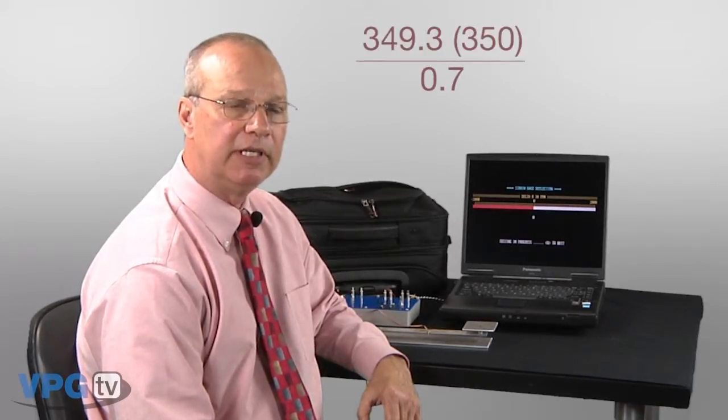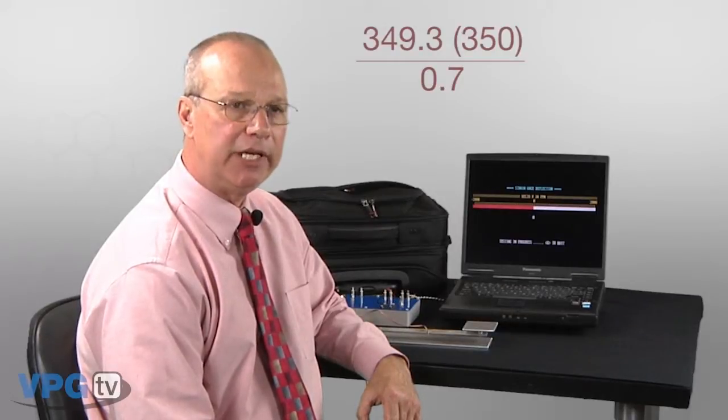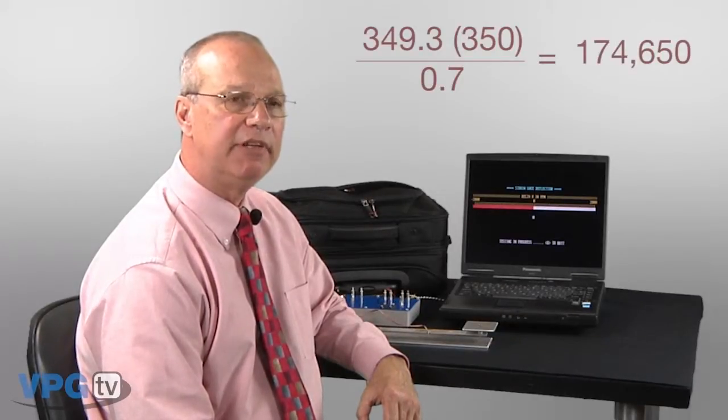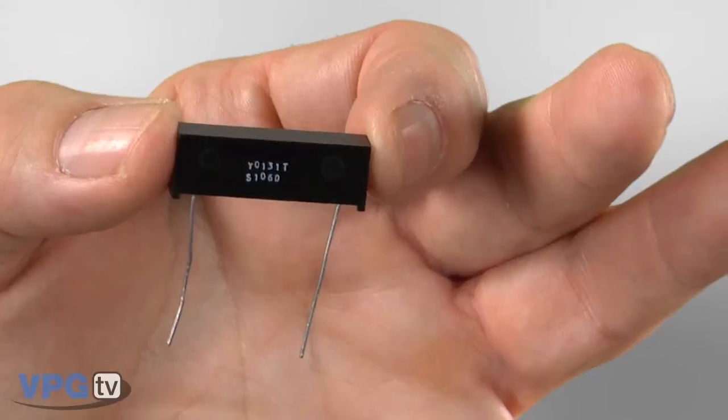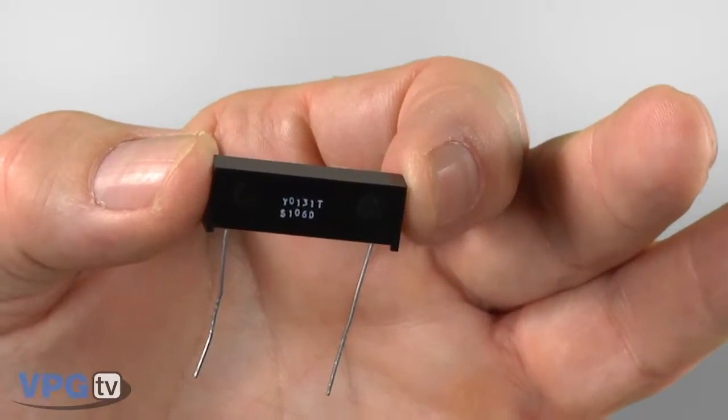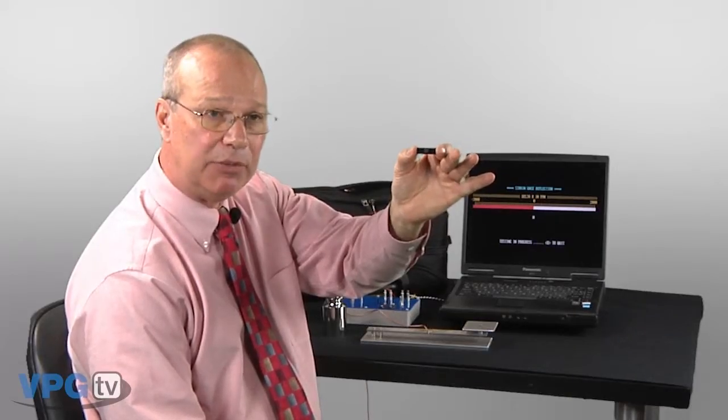Using the simple parallel resistance formula, product over the difference, a negative 2,000 ppm change calculates out to 174.65k plus or minus 0.01%. Just so happens that I have a Vishay foil resistor that is just at value. Let me connect it and we will see what happens.